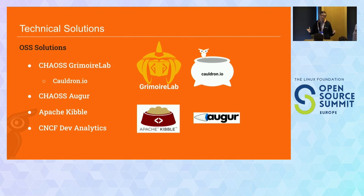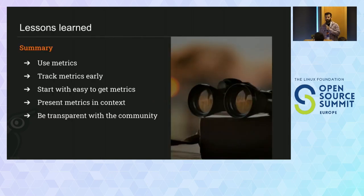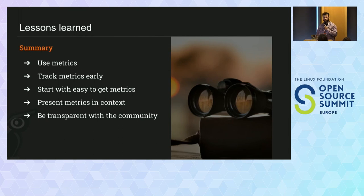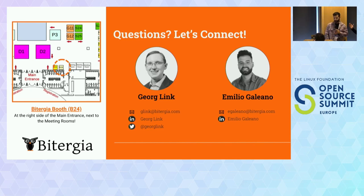So we've walked you through metrics, some examples, and how you can get started. And here is a quick recap of lessons and ideas from this presentation: First, use metrics to identify where a community needs help and track if actions lead to changes. Track metrics early and establish a baseline. Go for low-hanging fruit — easy-to-get metrics first, then get more sophisticated later. Present metrics in context and tell a story. Be transparent with the community about metrics, provide public dashboards and public reports.